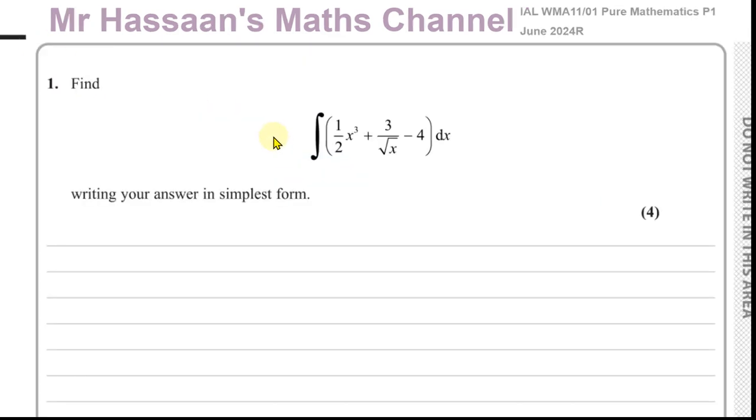So question number one. Here we're told to integrate with respect to x whatever's inside this bracket. So we have to first of all make sure that every term is in a form which is conducive to be integrated. So a half x cubed is fine, negative 4 is fine, it's 3 over root x. We have to rewrite this in a way that is conducive for integration.